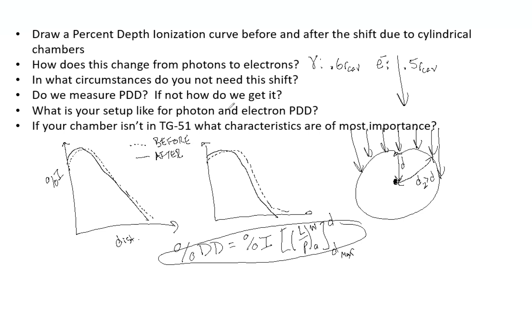So what is your setup like for photon and electron? So for photons, we are going to use a waterproof sleeve. If used, it's made of PMMA, a less than one millimeter thick, some very small sleeve. For photons, output can be SSD or SAD. And it depends on your clinic. Either one is good. There's not one correct choice. I think SSD is more popular. But again, that doesn't mean SAD is wrong.